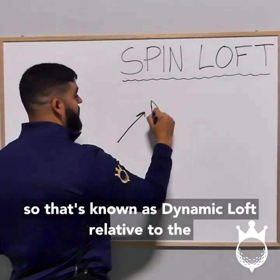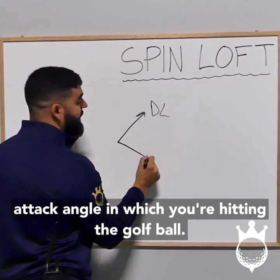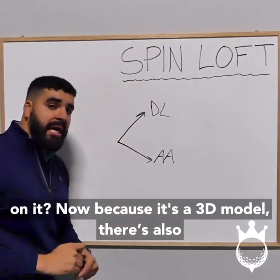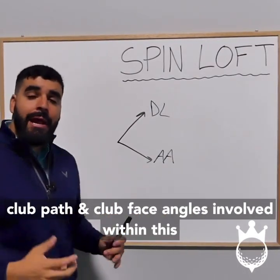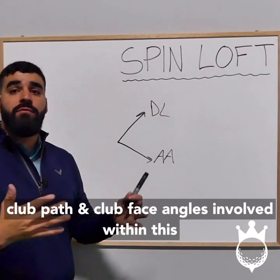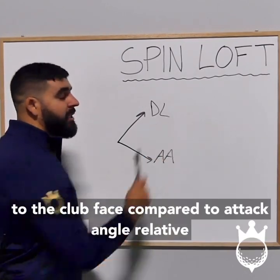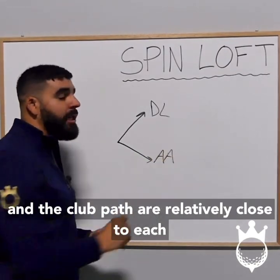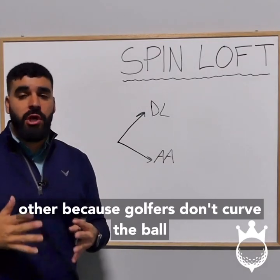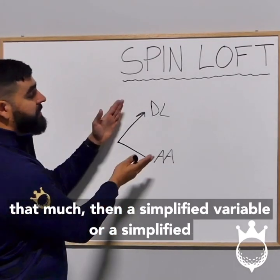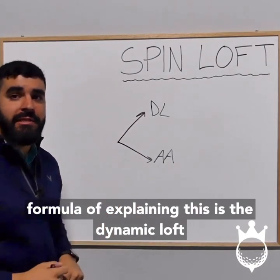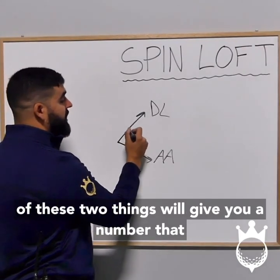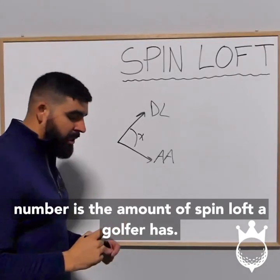That's known as dynamic loft, relative to the attack angle in which you're hitting the golf ball — so are you hitting up or are you hitting down on it? Because it's a 3D model, there's also club path and club face angle involved. So it's actually dynamic loft relative to the club face compared to attack angle relative to the club path. But because the face angle and the club path are relatively close to each other, a simplified formula is dynamic loft relative to attack angle. The combination of these two things gives you a number — that number is the amount of spin loft a golfer has.